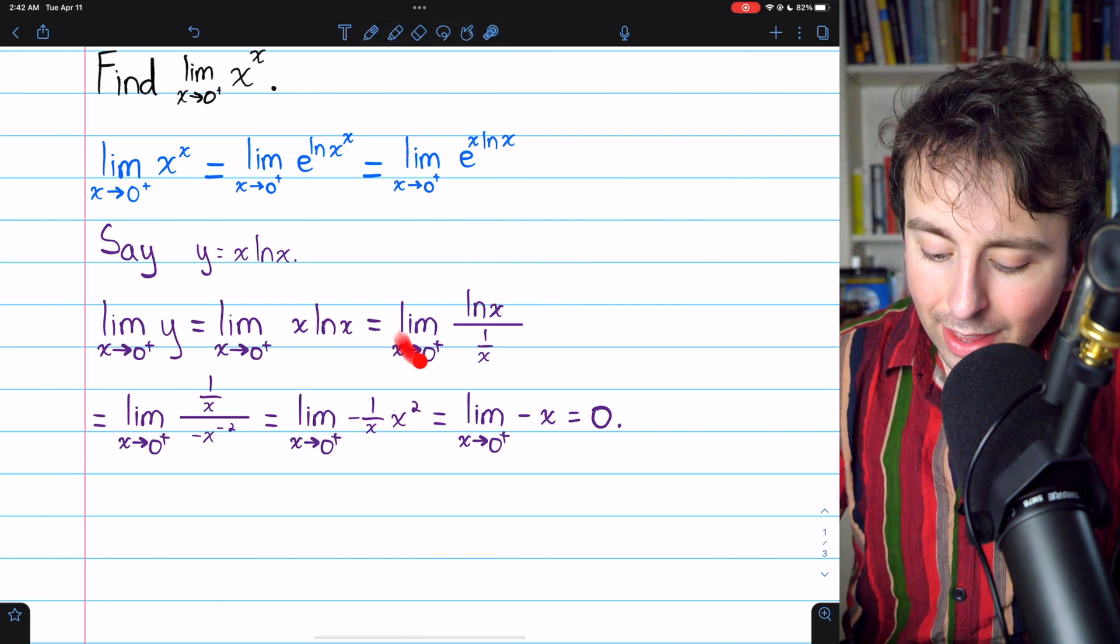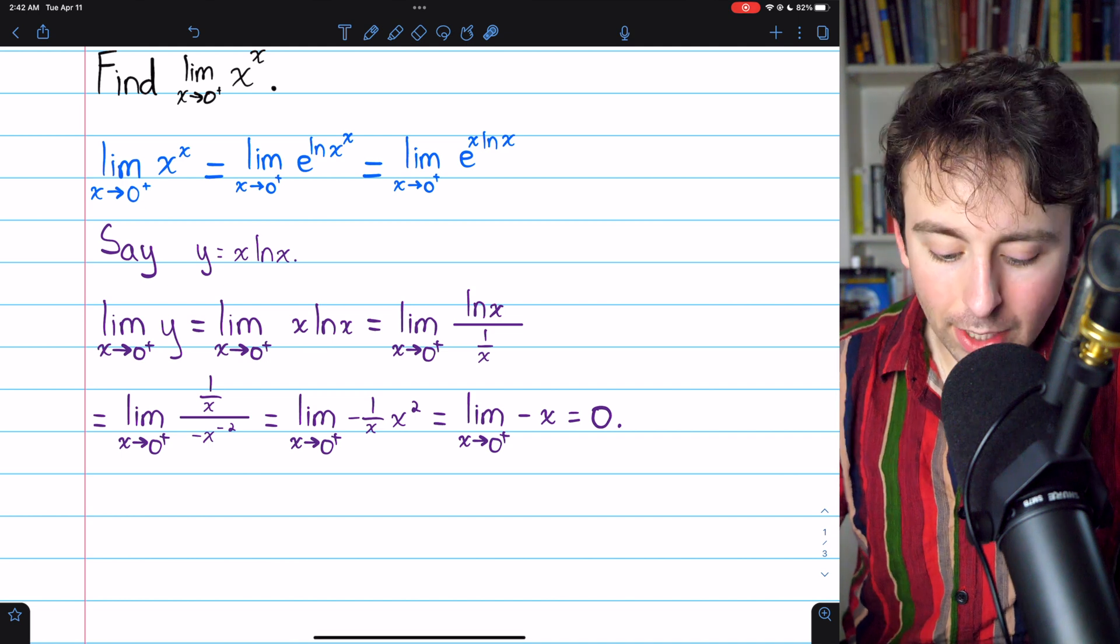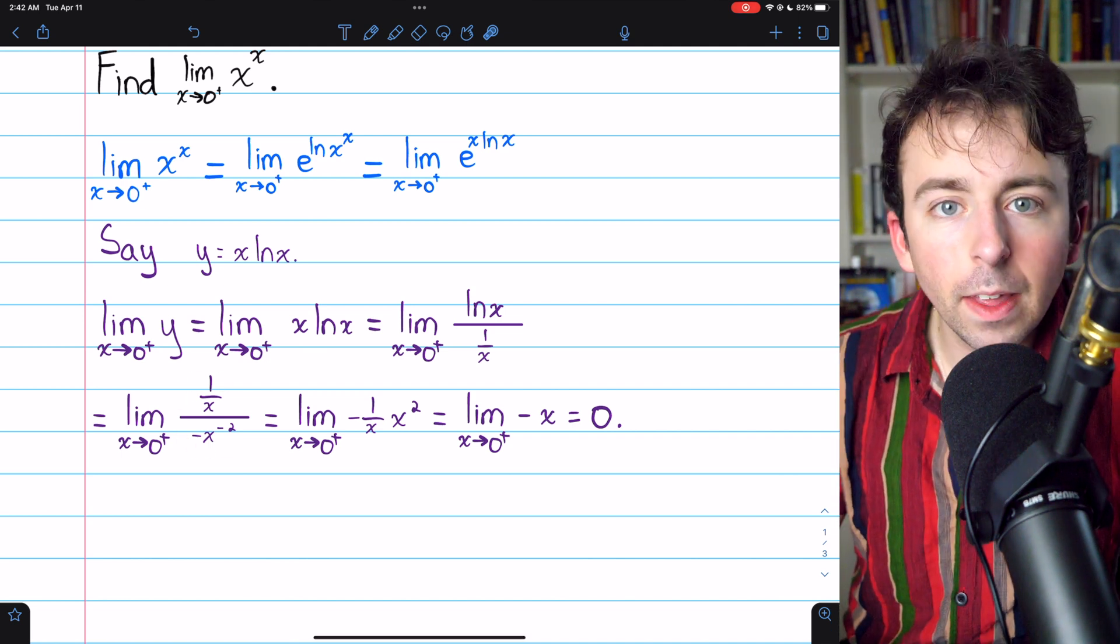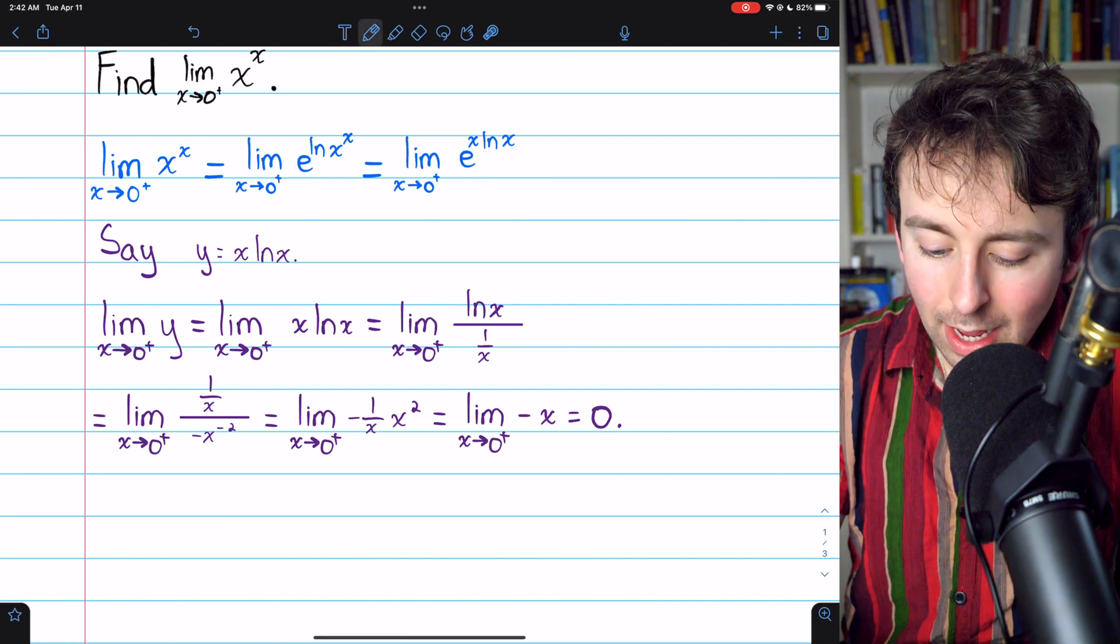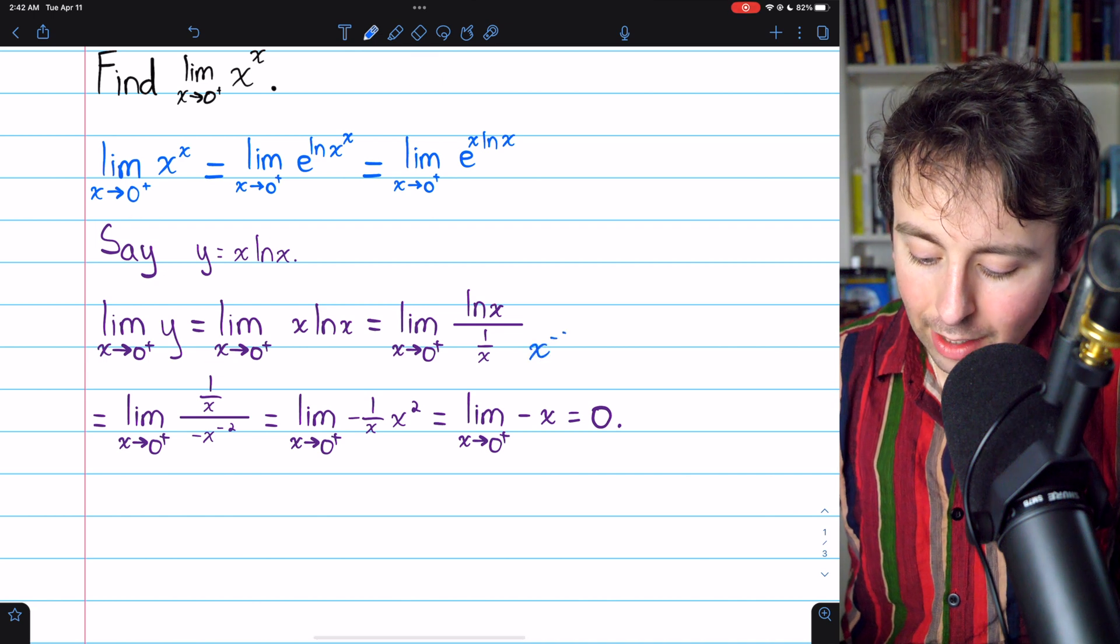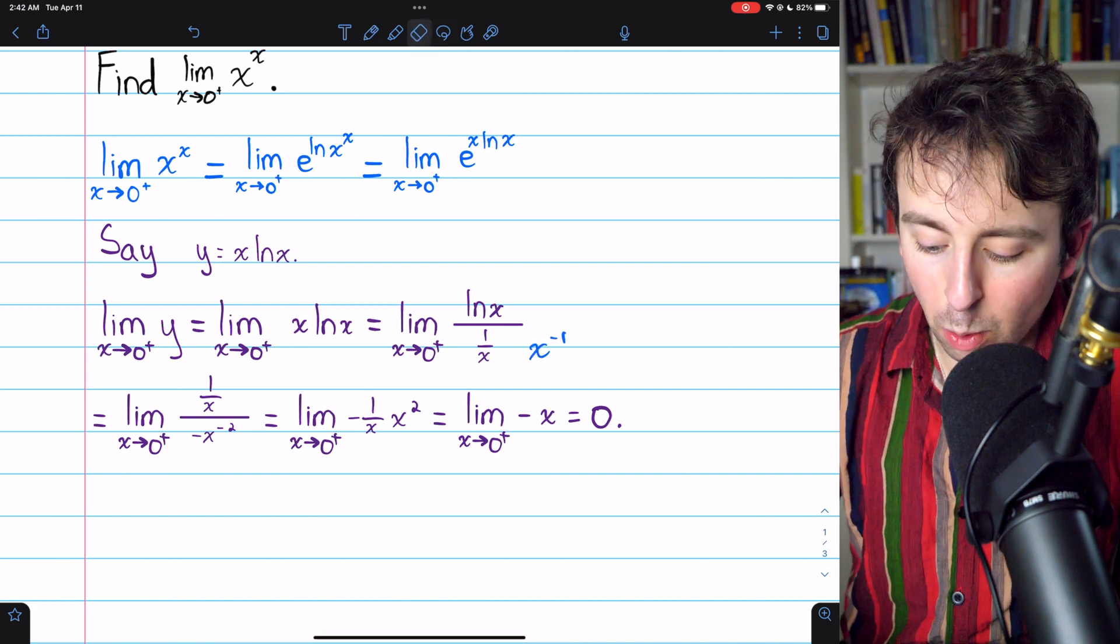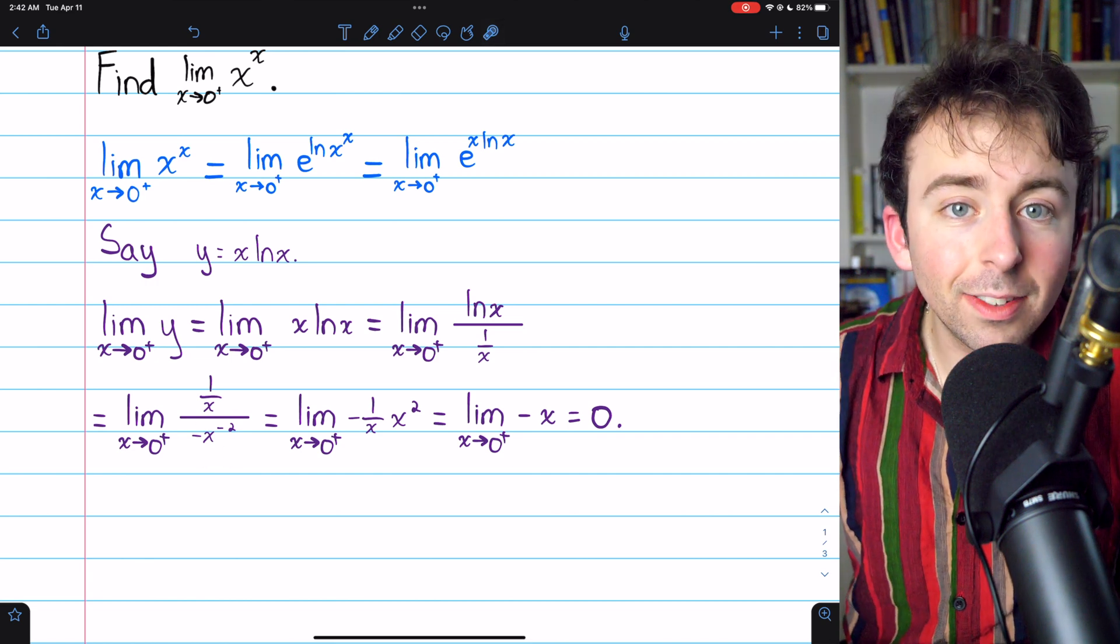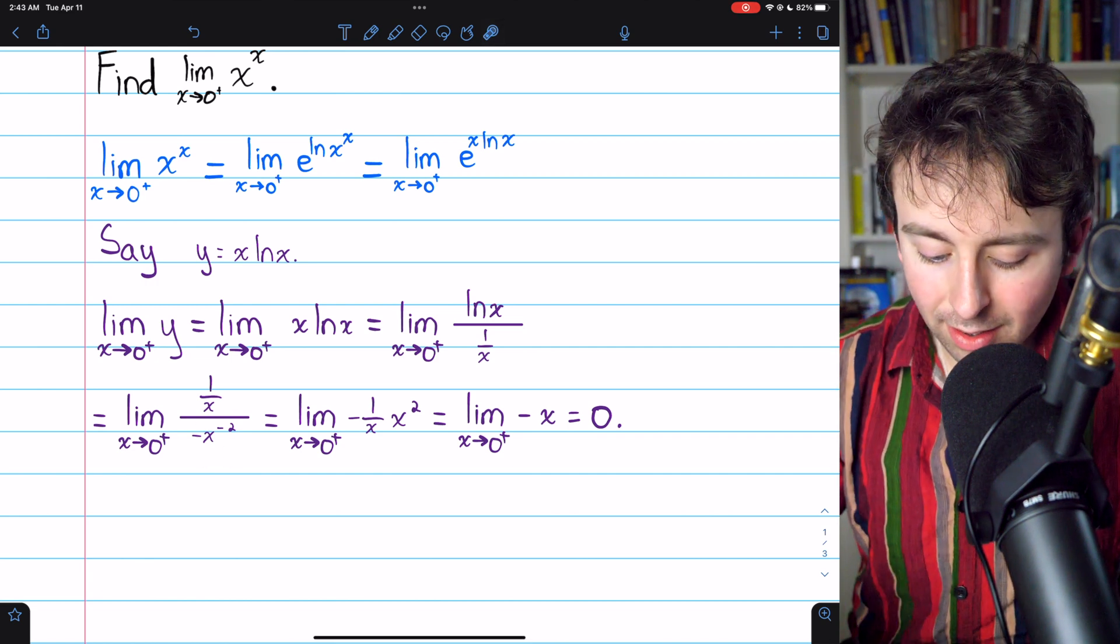So, to evaluate this limit, we can look at the limit of the ratio of the derivatives of the top and bottom. The derivative of ln x is 1 over x, and the derivative of 1 over x, well, 1 over x is x to the negative 1. So, we can just apply the power rule. The derivative of that is negative x to the negative second. And simplification gets us the rest of the way.